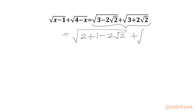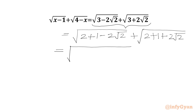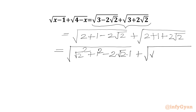Similarly, for the square root of (3 plus 2√2), we write 3 as 2 plus 1, then we have plus 2√2. Now we can write (√2)² plus 1² minus 2 times √2 times 1, and then √2 squared plus 1 squared plus 2 times √2 times 1.